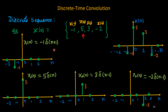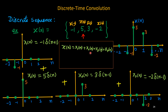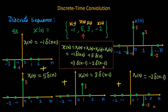Now combining all four signals: since their locations are different, they don't interfere with each other — when x₁ is present, others are absent. So we can write x(n) = x₁(n) + x₂(n) + x₃(n) + x₄(n), which gives x(n) = −1·δ(n+1) + 5·δ(n) + 3·δ(n−1) − 2·δ(n−2).